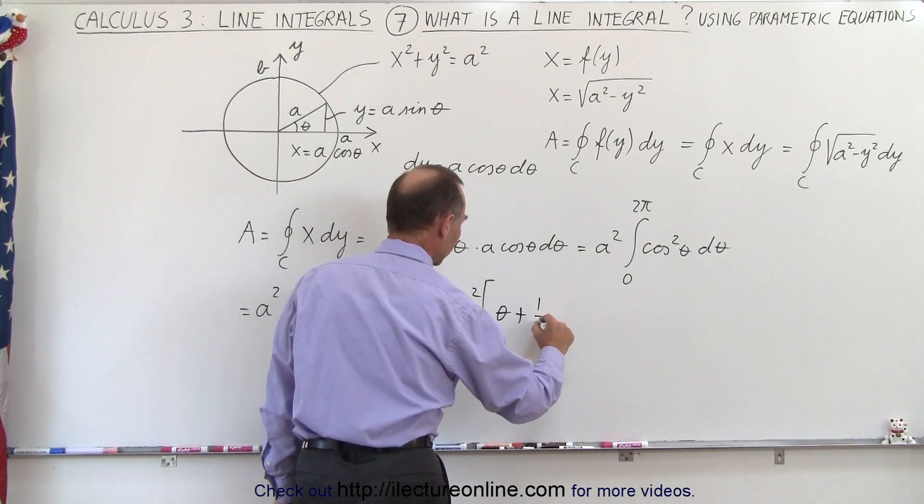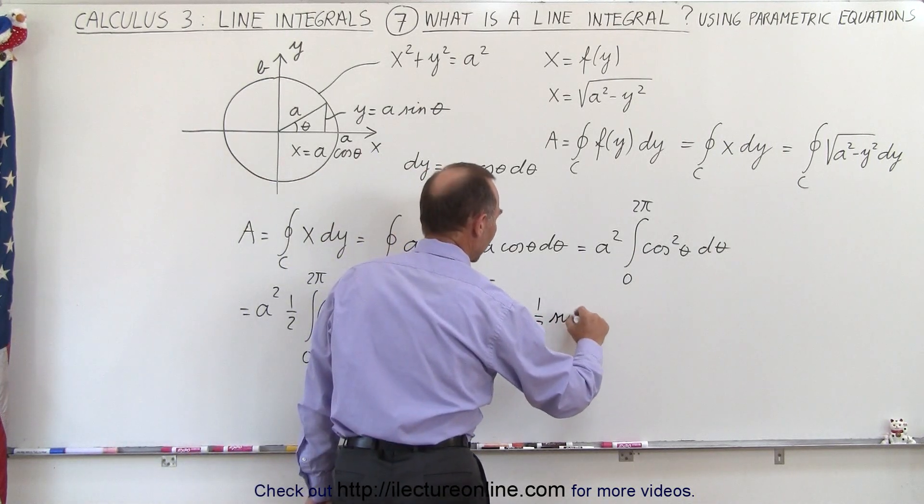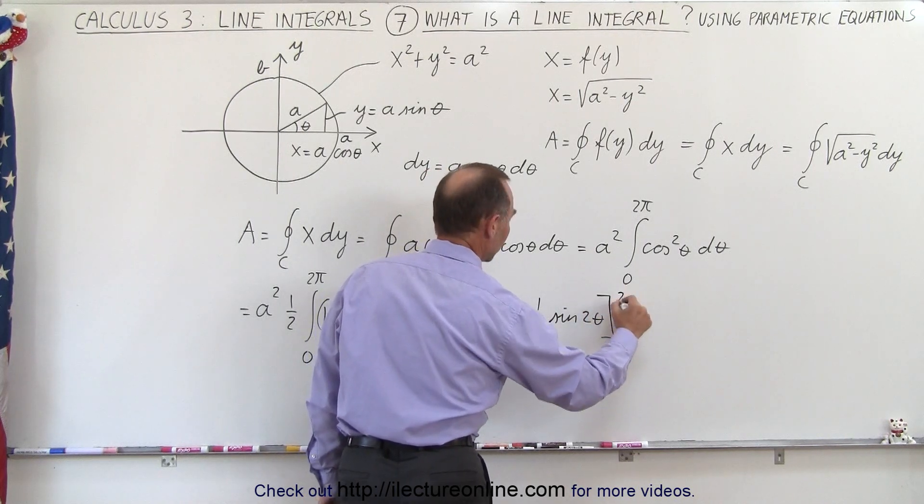So plus 1 over 2. The cosine integrated becomes a sine, the sine of 2 theta, and then evaluate it from 0 to 2 pi.